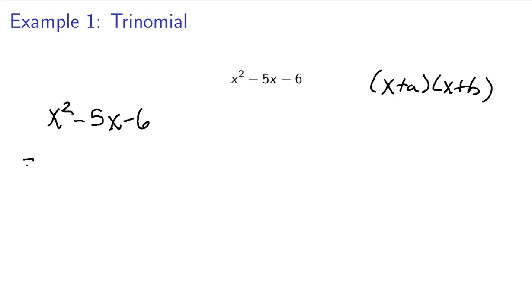So that means we want two numbers that multiply to make negative 6 and add to make negative 5. Well that's going to be negative 6 and positive 1. That's going to be x minus 6 times x plus 1, because negative 6 times positive 1 will give us negative 6.